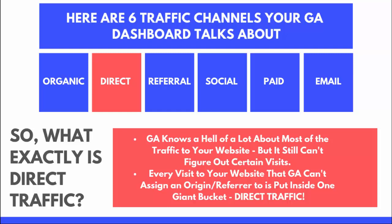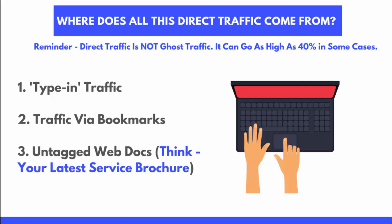GA knows a lot about the traffic coming into your site, but it still can't figure out certain visits. Every visit that GA can't assign an origin or referrer is put inside one giant bucket called direct traffic. It may as well be called 'everything else,' because a lot of the time it's not actually direct. Originally people thought direct meant someone typed in the URL, but in most cases that's not as high a percentage as what direct traffic usually comes in at — around 10–12% for most large clients.